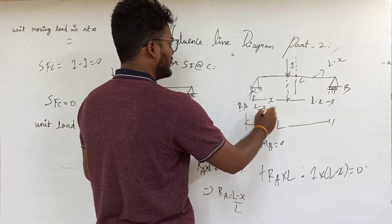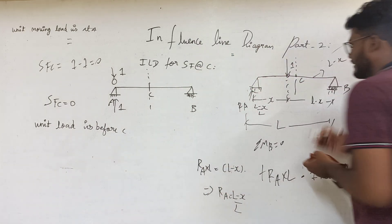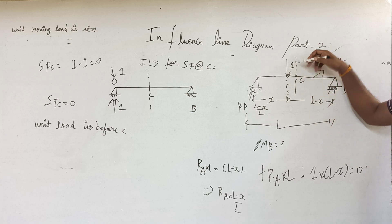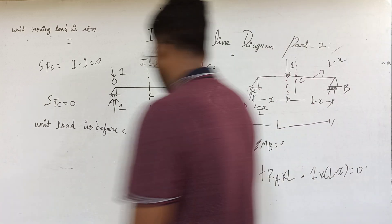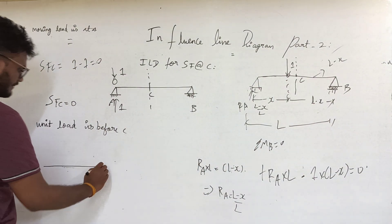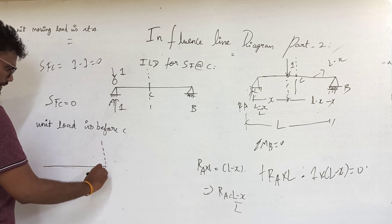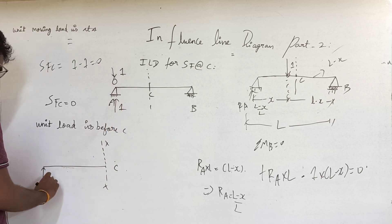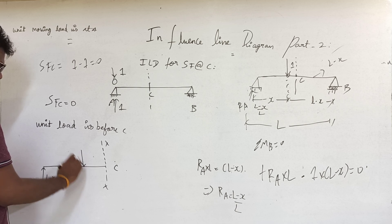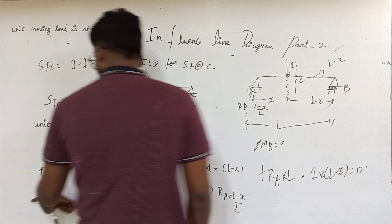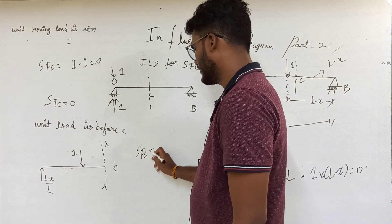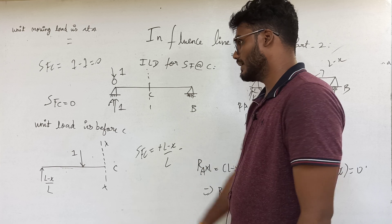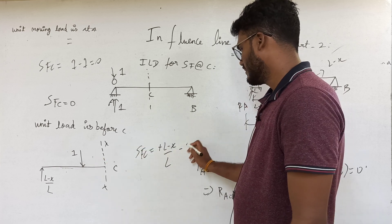RA value is (L minus x) by L. For shear force at section C, a unit load acts downward and the reaction acts upward. On the left side of section C, the reaction (L minus x) by L acts upward — that is positive — and the unit load acts downward, which is negative. So shear force at C equals (L minus x) by L minus 1.